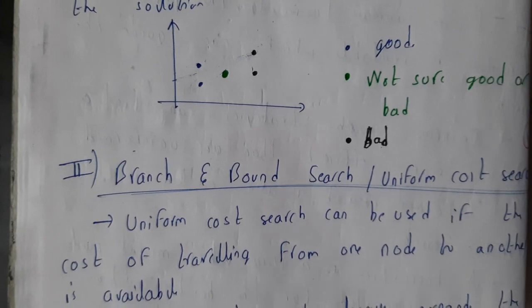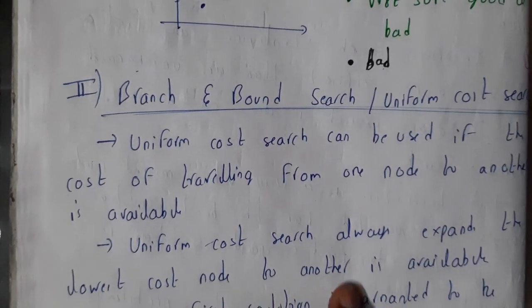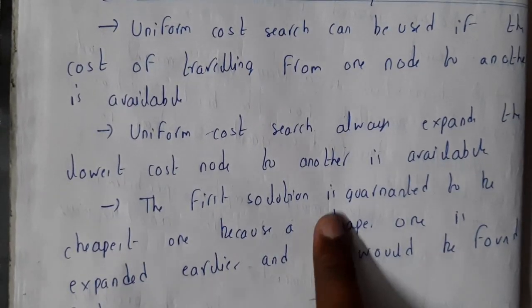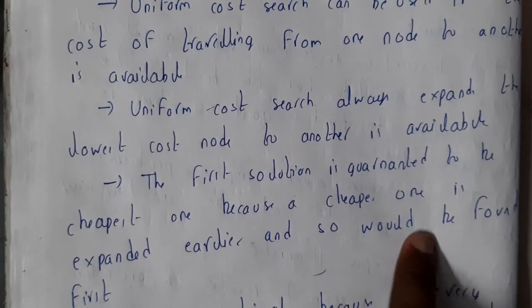Uniform cost search always expands the lowest cost node. The first solution is guaranteed to be the cheapest one because the cheaper ones are selected in the earlier stages.